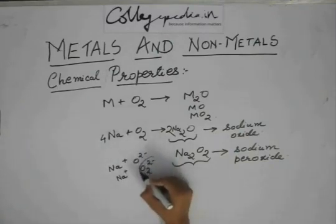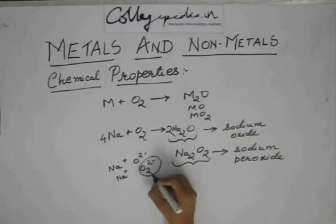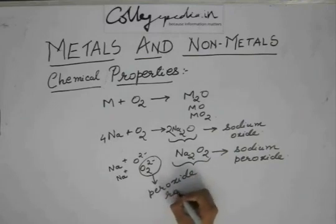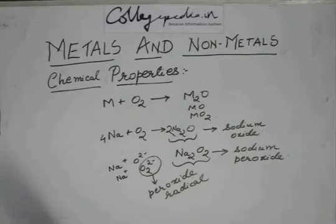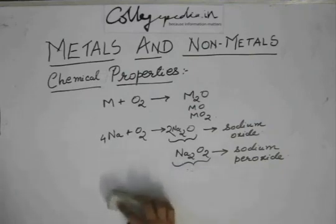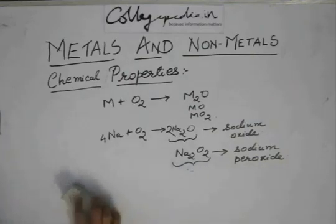This is a radical called the peroxide radical. When sodium reacts with O2 to form Na2O, it can also form Na2O2 depending on the conditions.